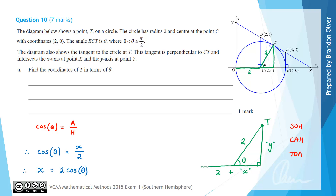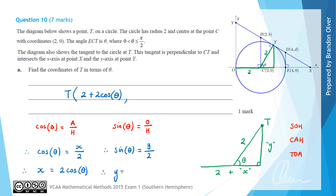However, that is not the x coordinate of T — we still need to add 2 onto that. So the x coordinate of T is going to be 2 plus 2 cos theta. For the y value, we use the sine ratio: sine of theta equals the opposite over the hypotenuse, so y equals 2 sine of theta. That is the y coordinate of T, giving us T = (2 + 2cosθ, 2sinθ), and that is the answer to part A.